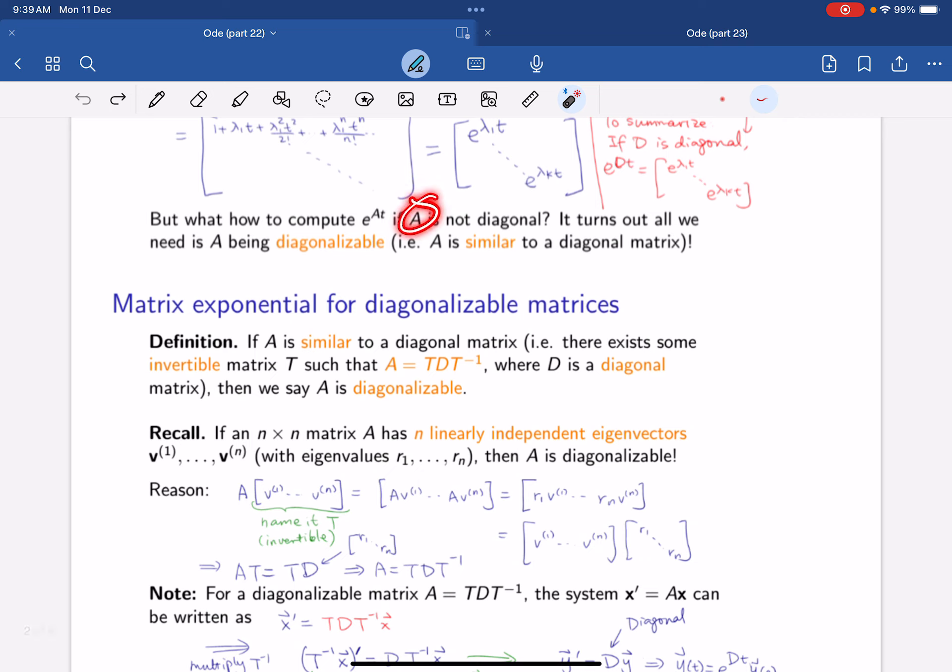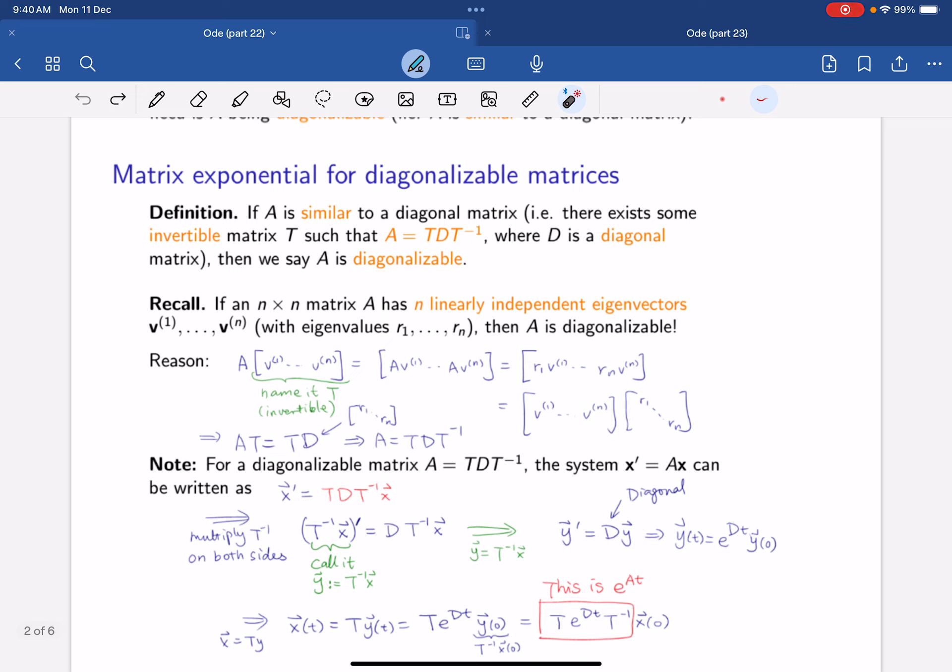Now, what happens if A is not diagonal? Well, it turns out that we just need A to be diagonalizable, and we'll have a similar result. So if A is diagonalizable, or similar to a diagonal matrix, then A equals to TDT inverse. And we know that if A has n linearly independent eigenvectors, then A is diagonalizable.